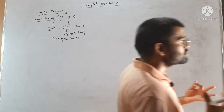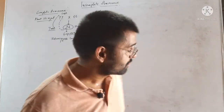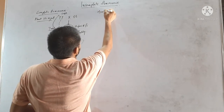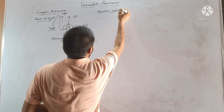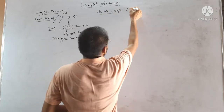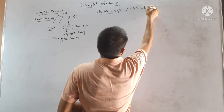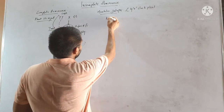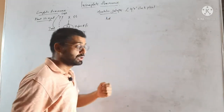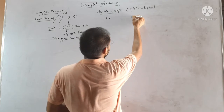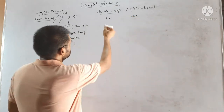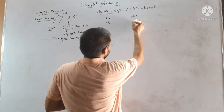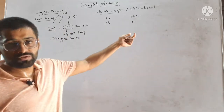But it is not always true in every case. For example, in the case of Mirabilis jalapa, the four o'clock plant, when we cross a red-flowered plant with a white-flowered plant — homozygous red (RR) crossed with homozygous white (rr).